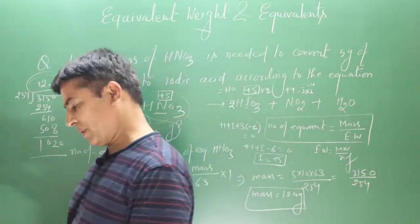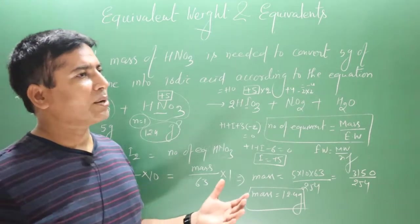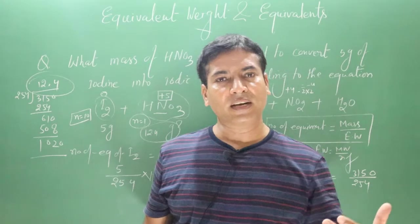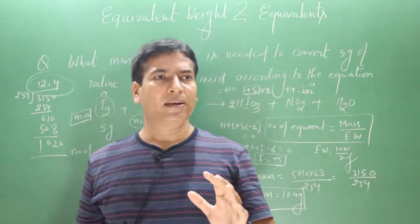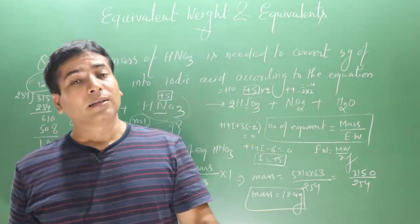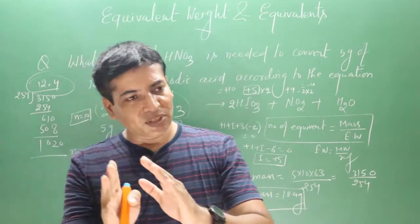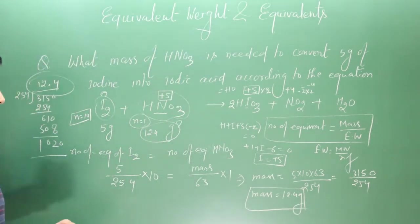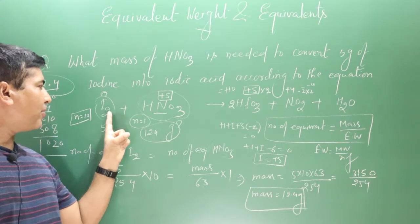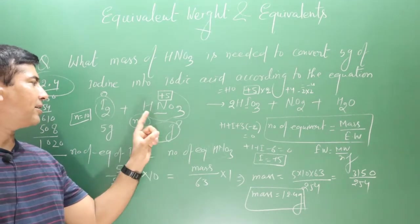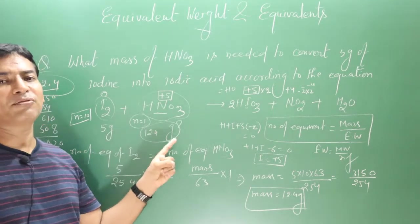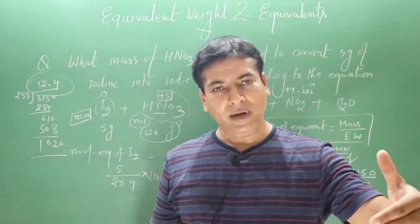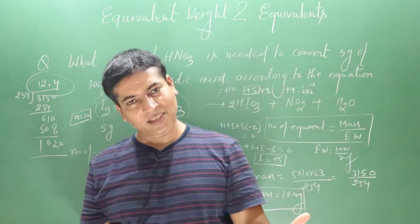The concept of equivalents is simple: for whatever reactants or products are given in a chemical reaction, we equate the number of equivalents of the relevant substances. Apply the formula — number of equivalents = mass / molecular weight × n-factor — plug in the values, and calculate the required quantity.